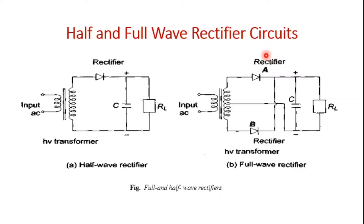The rectifier may be an electron tube or solid state device. Nowadays single electron tubes are available for peak inverse voltages up to 250 kV. Semiconductor or solid state diodes are available up to 20 kV; for higher voltages, several units are used in series. When multiple units are used in series, transient voltage distribution along each unit becomes non-uniform, and special care must be taken to make the distribution uniform.